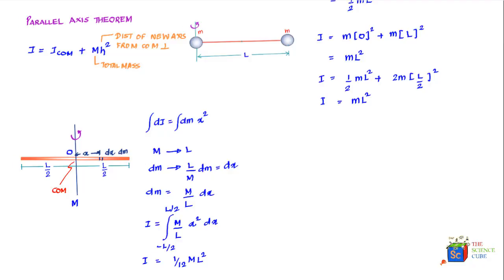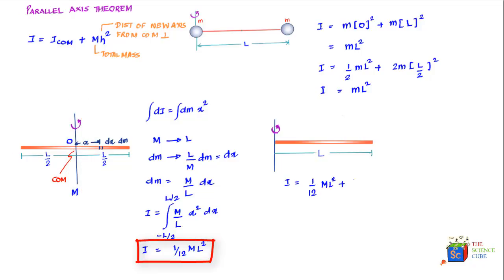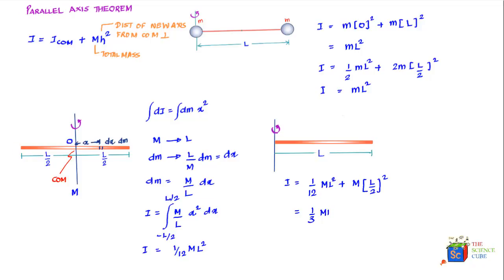Now if we move the axis of rotation to the extreme left end of the rod, we can use the parallel axis theorem instead of re-deriving. I_end = I_cm + mh² = (1/12)ml² + m·(l/2)² = (1/12)ml² + (1/4)ml² = (1/3)ml².